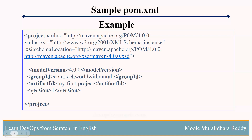And version is what type of version that particular project is. We have two things: one is snapshot and the other is release. We can declare either one. This is a sample pom.xml. These are the mandatory fields inside the pom.xml.